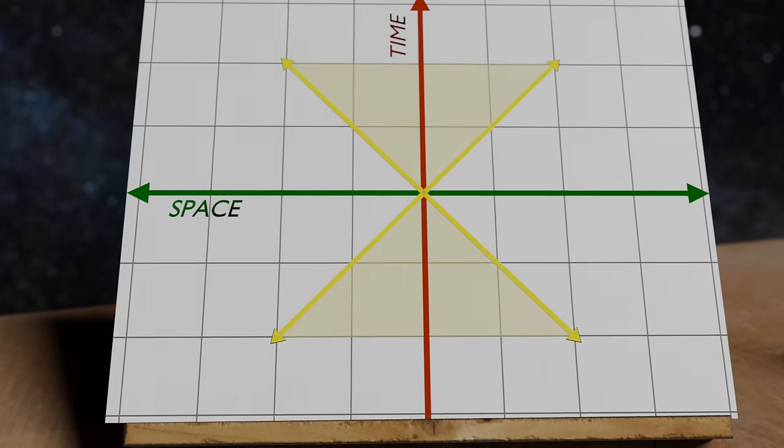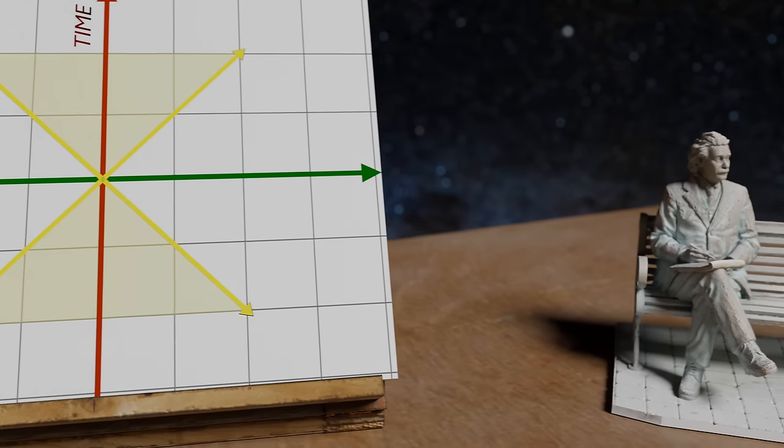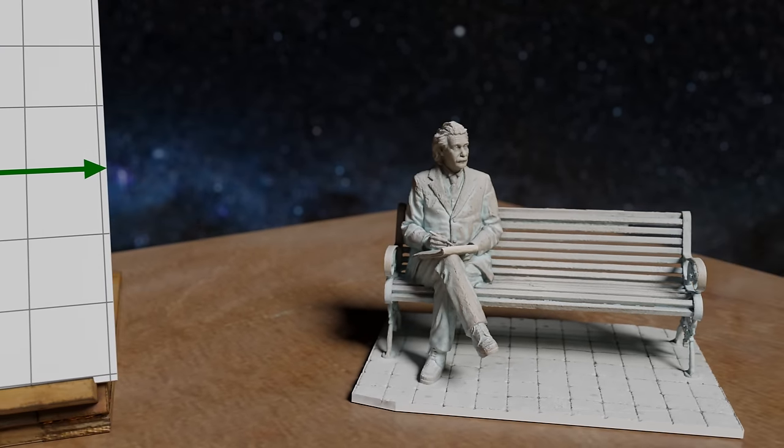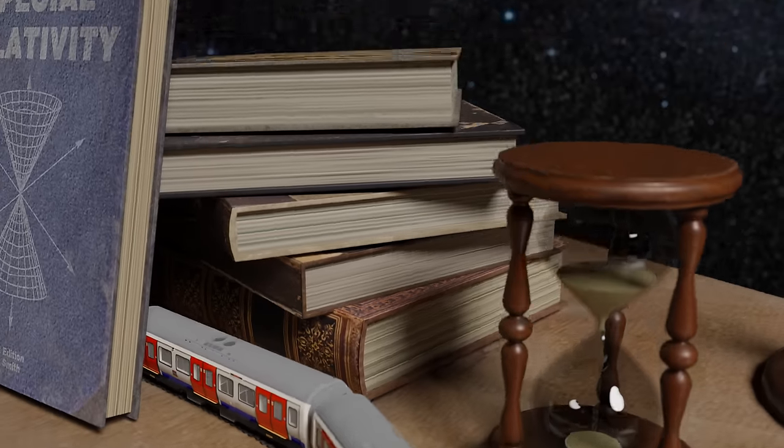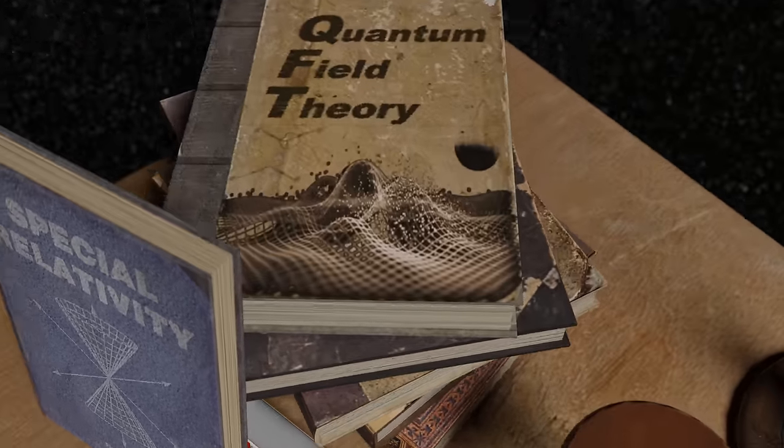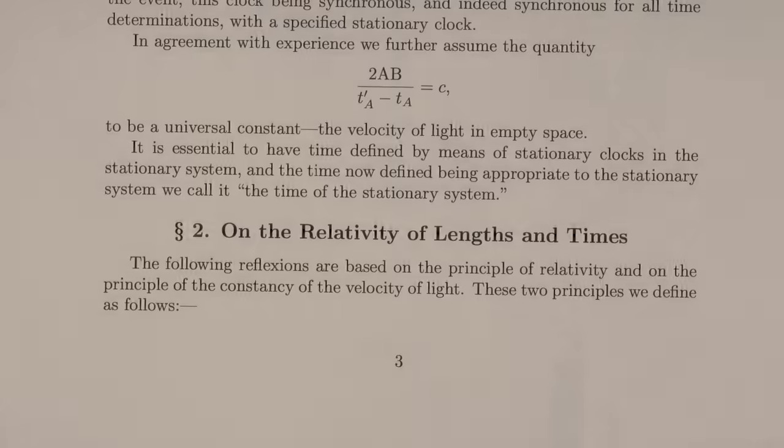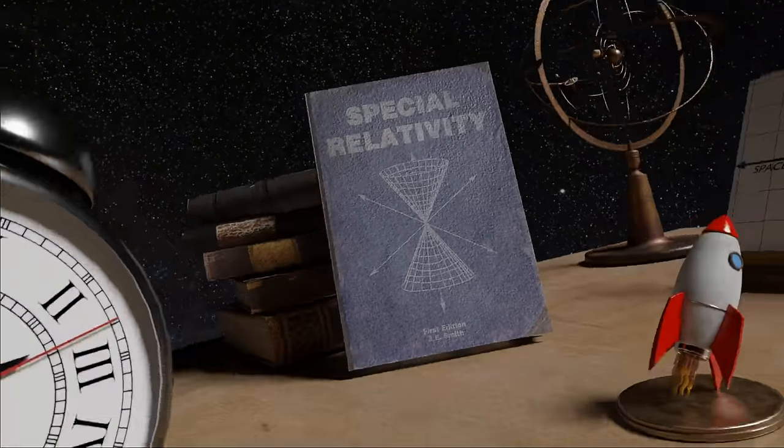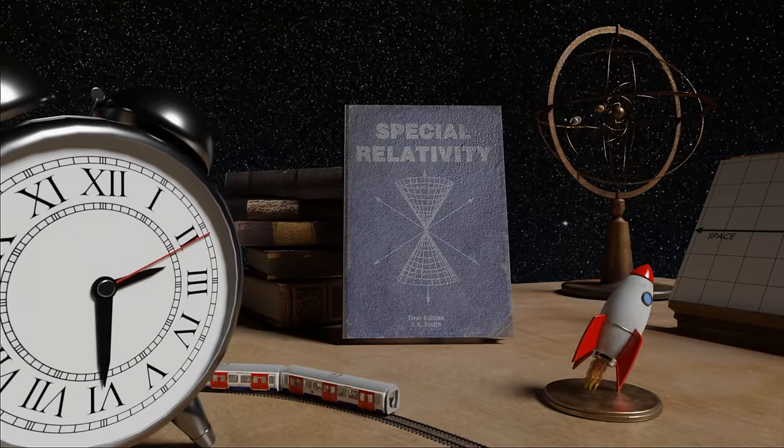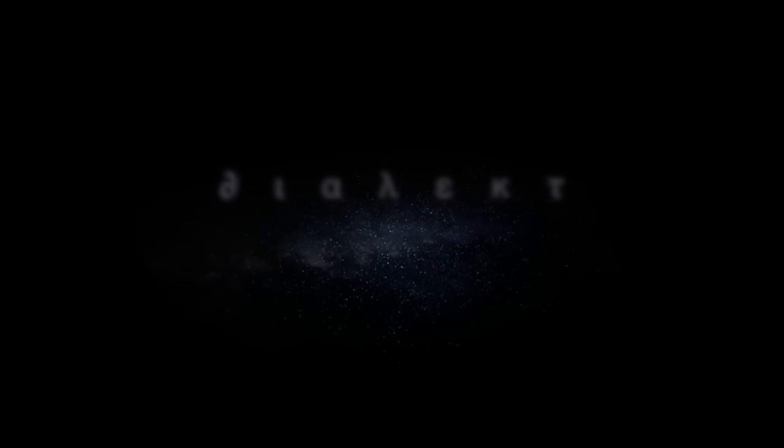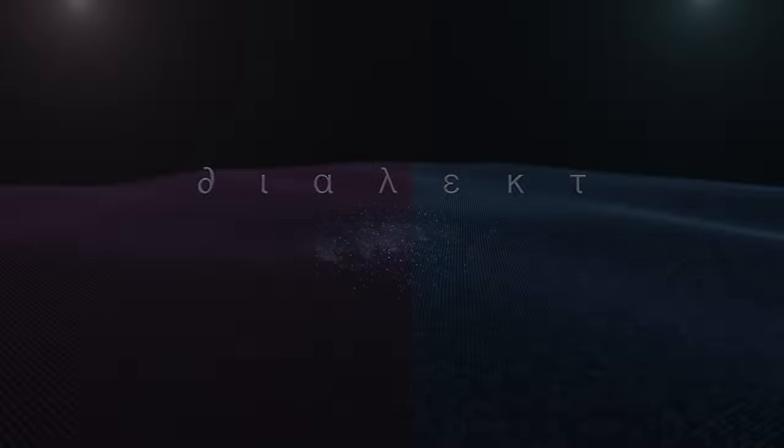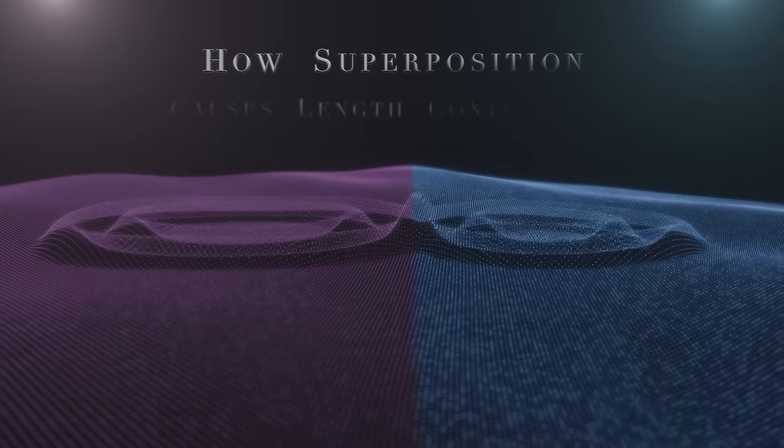The theory of special relativity is notoriously ambiguous on this subject. But we'll find that by drawing a little inspiration from other contemporary theories, we can begin to piece together a solution to one of the longest-standing mysteries in modern physics. Plus, uncover a whole lot more. This is Dialect with How Superposition Causes Length Contraction.